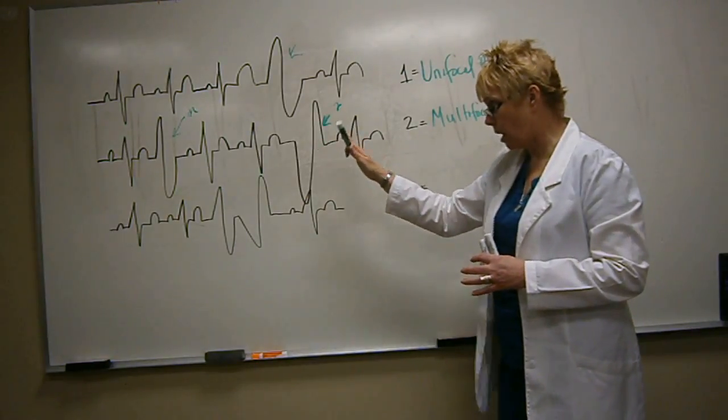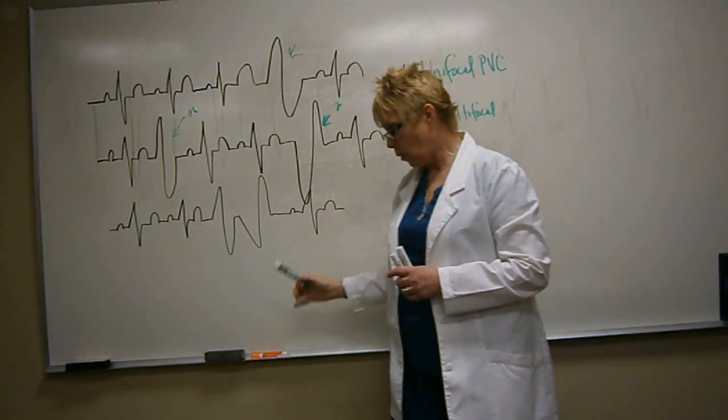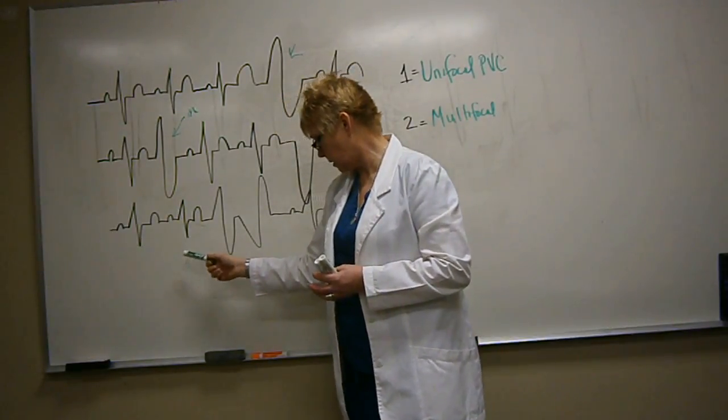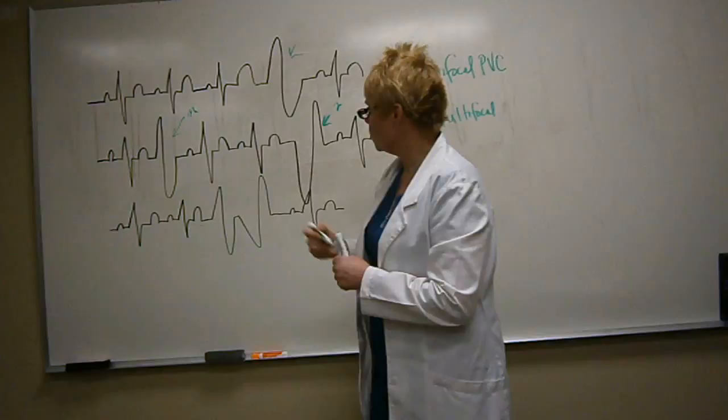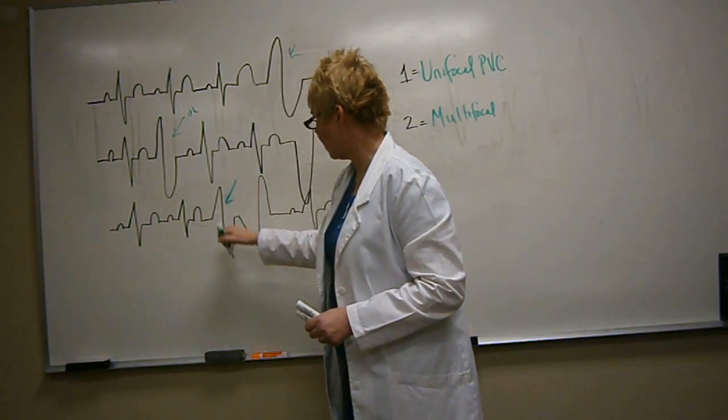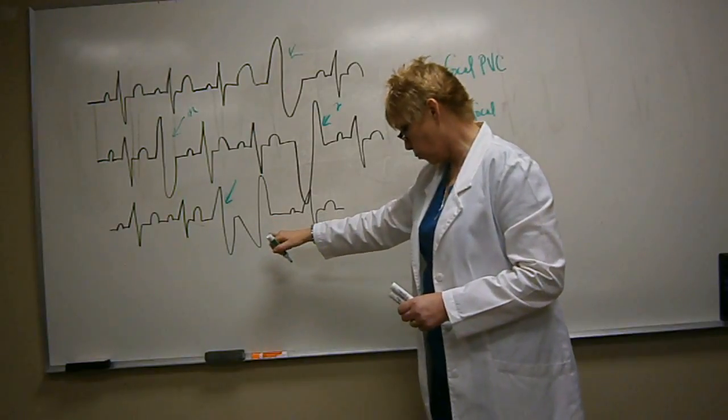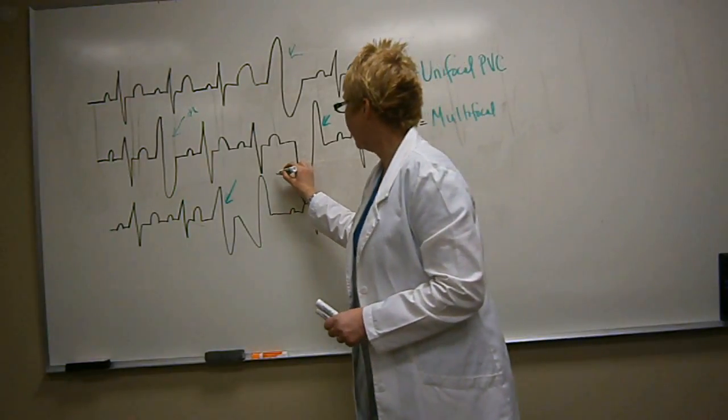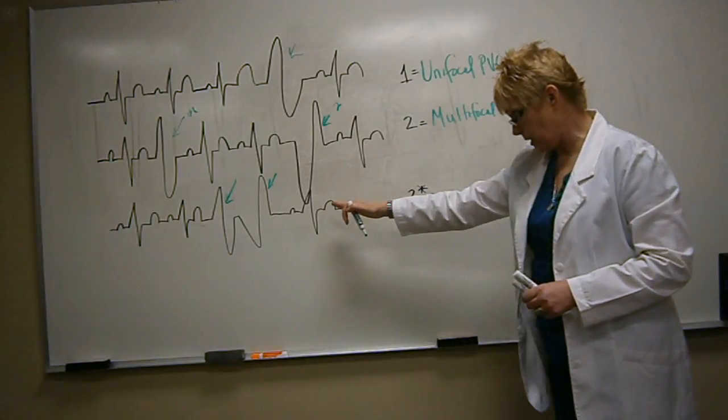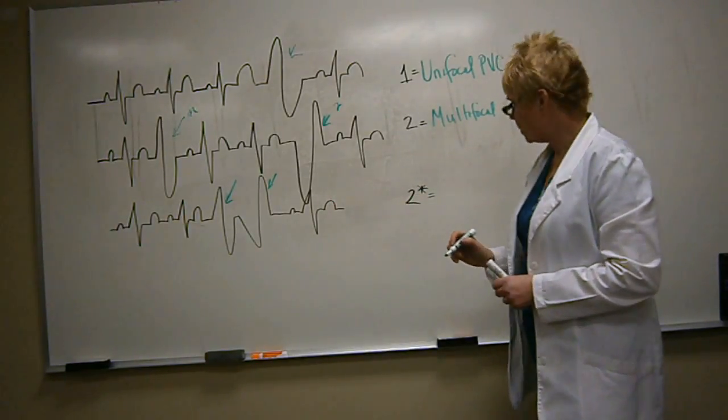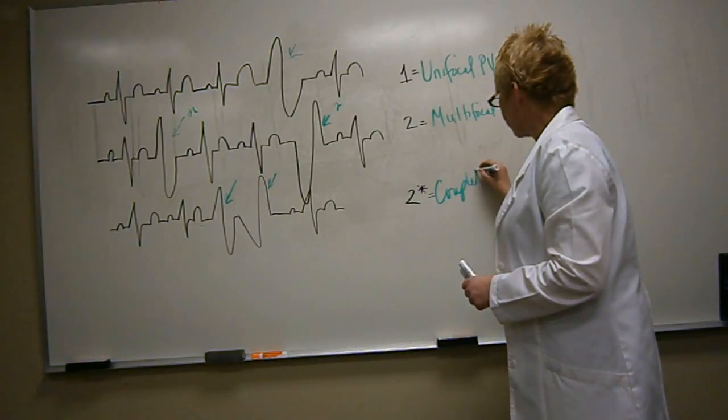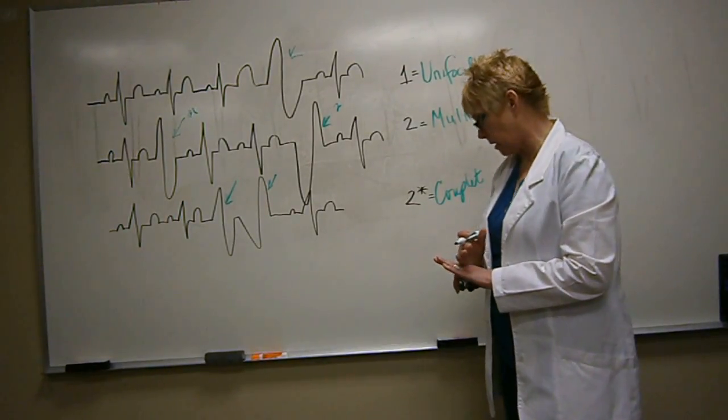So they're still isolated one at a time. However, this third strip is actually much worse. Sinus, sinus, I have a PVC. The first one is going in an upward deflection, then down. Then the second one right next to it starts down, and then the deflection is up. So this one, and then it resumes to a sinus rhythm.